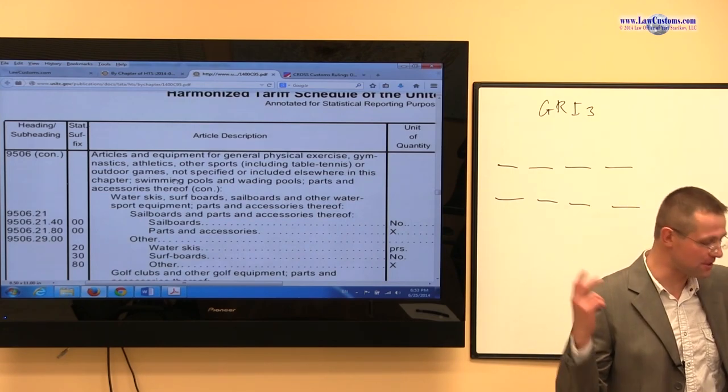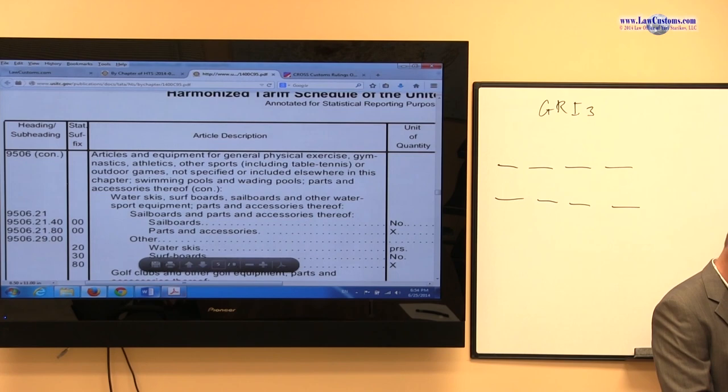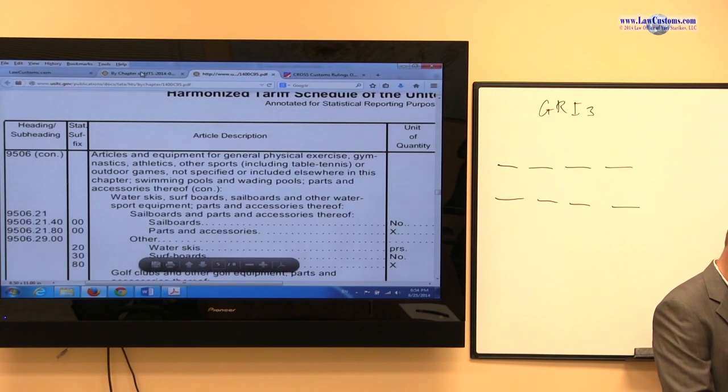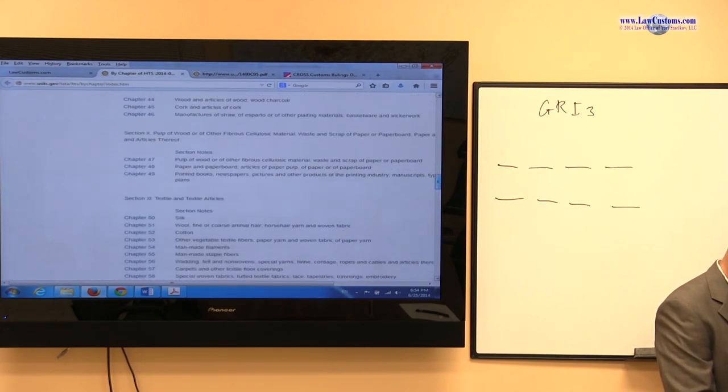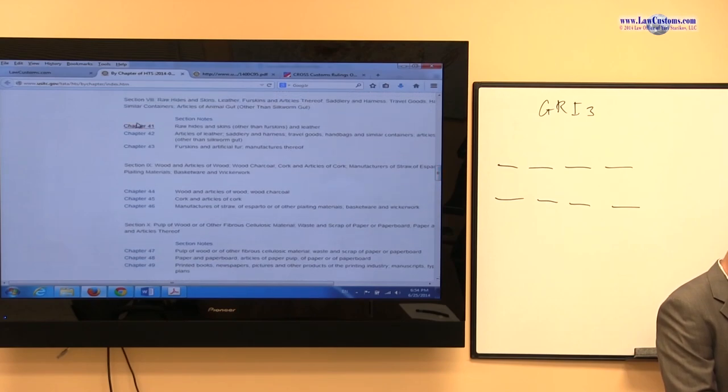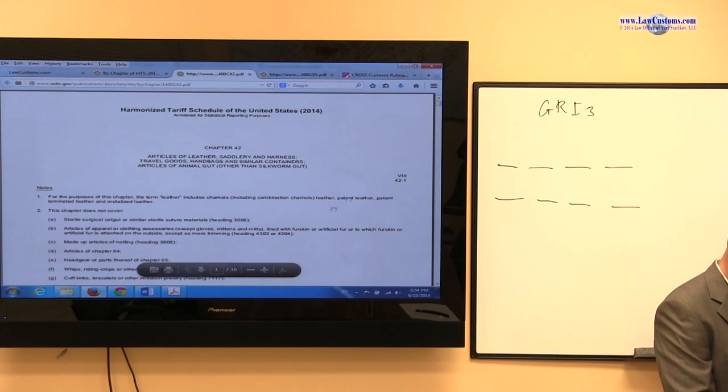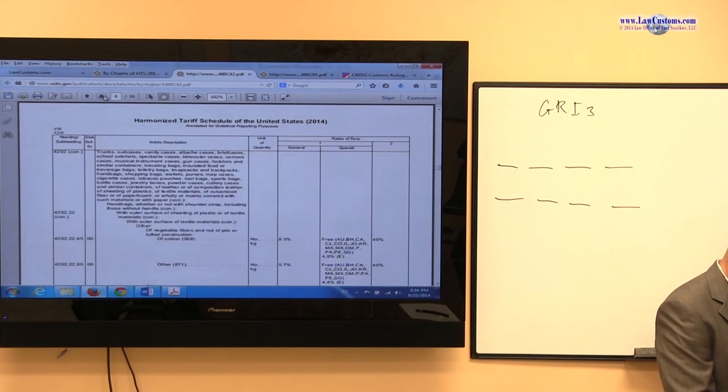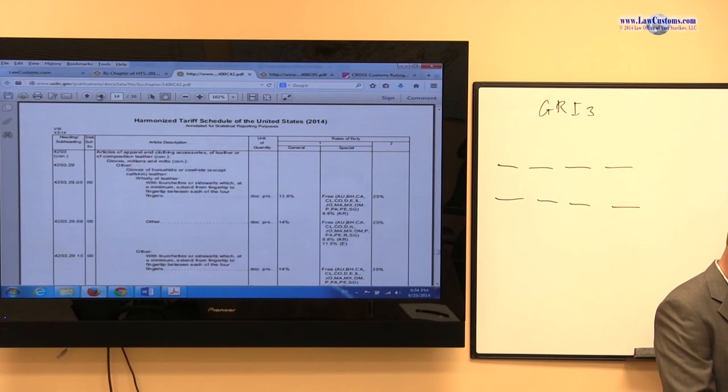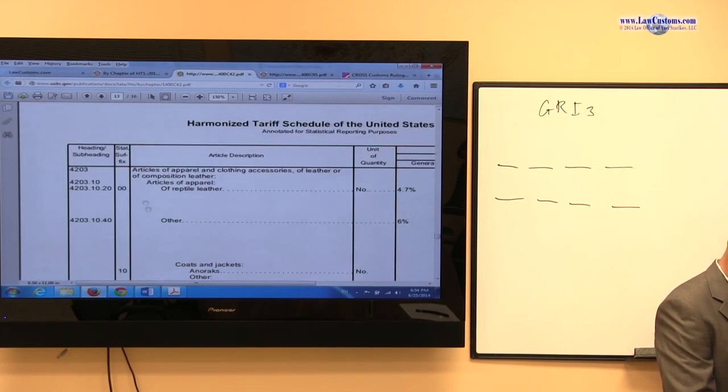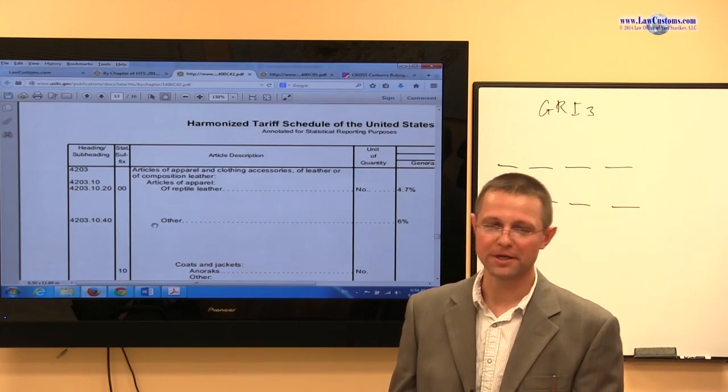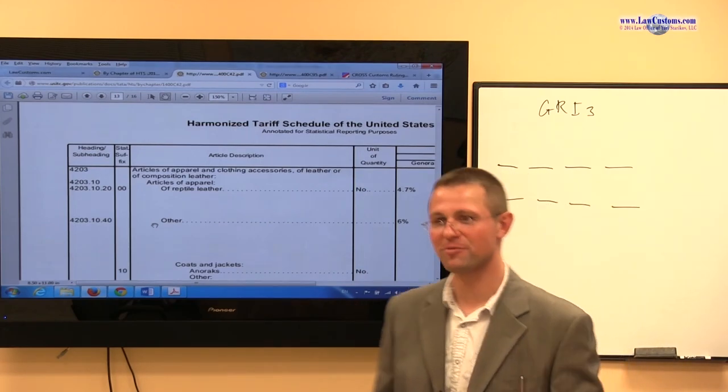But customs examiners give us two numbers, right? So one number was the HTS-US-429506, the sports equipment. And the other one was 4203. So going to this 42 chapter, let's see what we have. So we see already it's articles of leather. And we know that those gloves are made out of leather. So the next step would be to go to 4203 and really look at the text. And the text states, articles of apparel and clothing accessories of leather. So again, this is make provision. You have articles of leather.